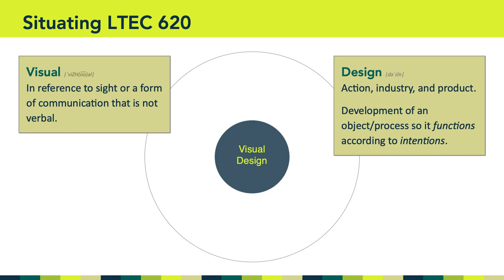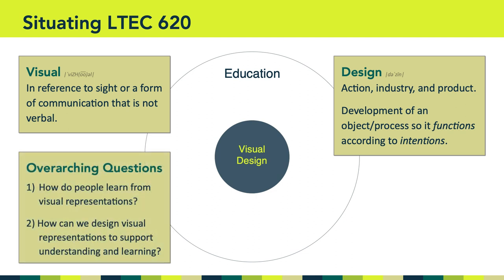This idea of designing with intention should prompt us to situate a course on visual design within our broader context. We should ask ourselves: what is the context in which we're studying visual design? In LTCH 620, we're not studying visual design in a school of arts or a college of design. Instead, we're studying visual design in a college of education, which means we should be thinking about the functions and intentions of visual design through the lens of teaching and learning.